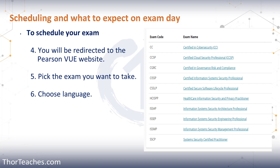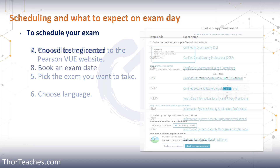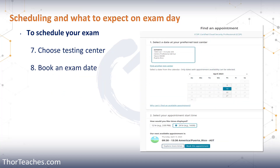The available languages are Simplified Chinese, English, German, Japanese, Korean, and Modern Spanish. Then you look for a testing center in your area — you can choose up to three options. Once you've chosen the test centers, click 'Next' in the bottom right corner and you'll see a calendar with available dates. Pick the date and time, then click 'Book This Appointment'.